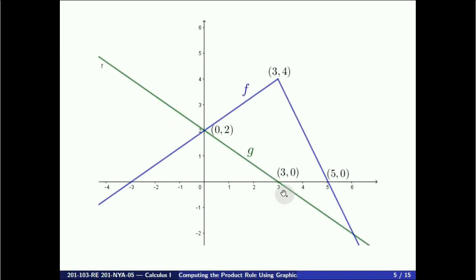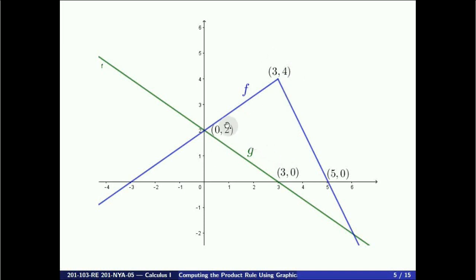Function f is a piecewise linear function defined by two rules. When x equals 1, we need to use the rule that applies when x is less than 3. So we take two points on that line left of 3: (0, 2) and (3, 4). Function g is linear and we take two points: (0, 2) and (3, 0).